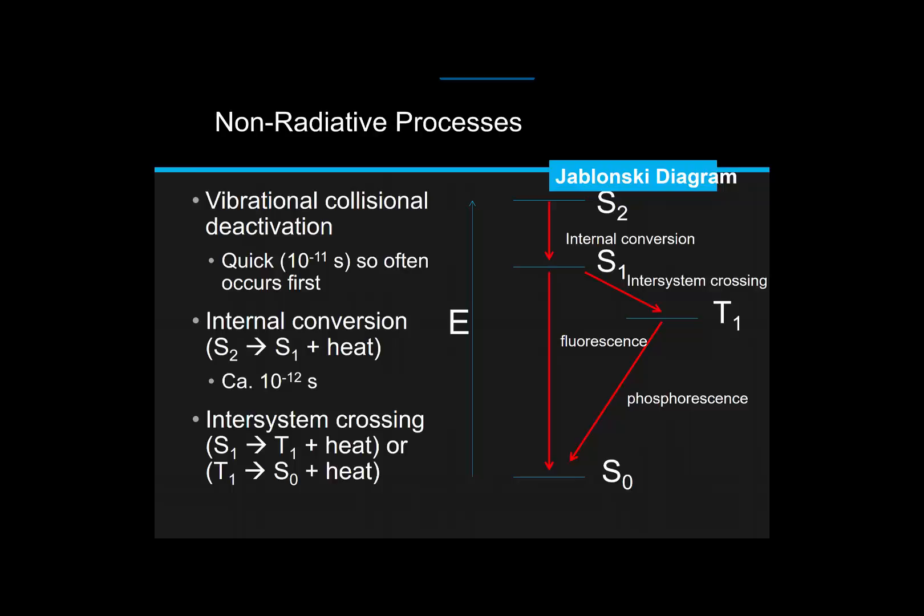S1, however, might undergo a change in spin to produce, through a slower non-radiative process we refer to as inter-system crossing, or ISC, to produce a triplet state T1 as shown on this slide. If T1 emits a photon at this point, returning to the ground state S0, then that emissive process is formally spin-forbidden and referred to as phosphorescence.